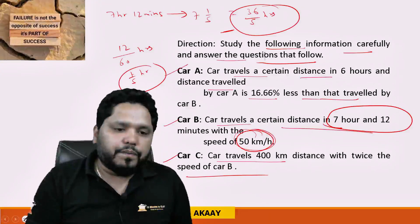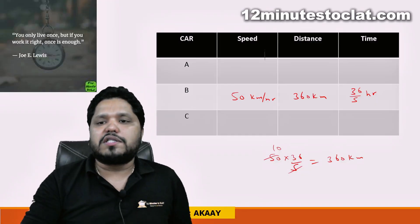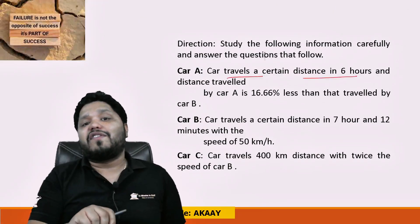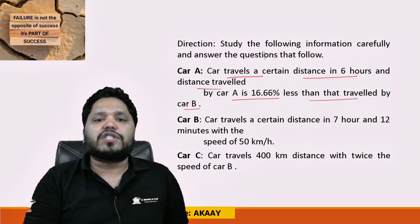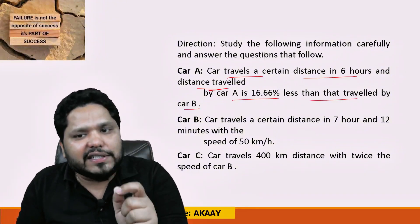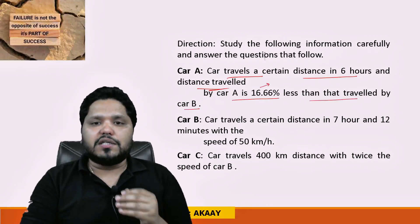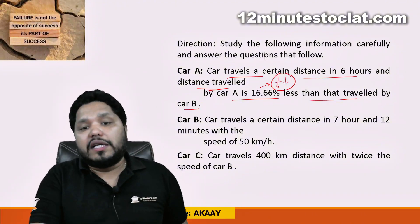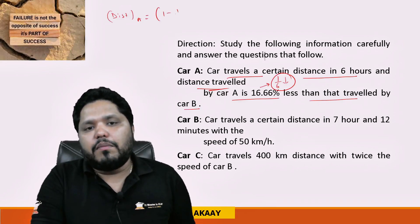For Car A, time taken is 6 hours. One more piece of information: Car A's distance is 16.66% less than Car B's distance. As we learned in percentage classes, 16.66% has a fraction equivalent of 1/6. So the distance traveled by Car A is going to be (1 − 1/6) times the distance traveled by Car B.